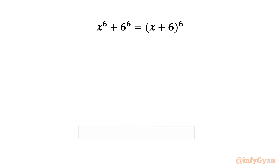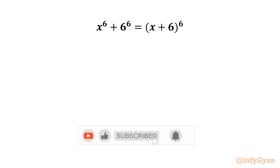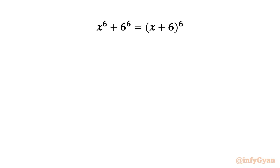Hello friends, welcome back to NCJAN. Today in this video we will be solving a very interesting algebraic equation: x power 6 plus 6 power 6 equal to x plus 6 whole power 6. If we expand x plus 6 whole power 6 we are going to get an x power 6 term, so that will cancel the LHS x power 6. This equation is quintic and we are going to find 5 solutions.